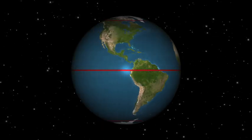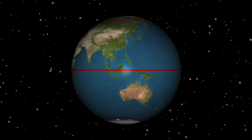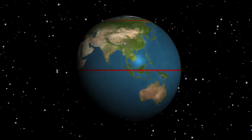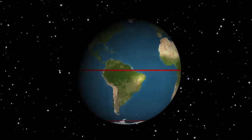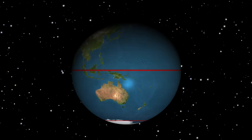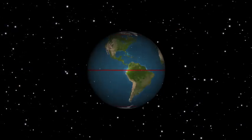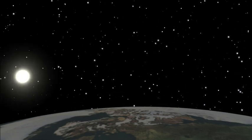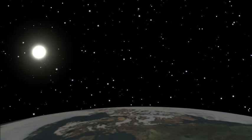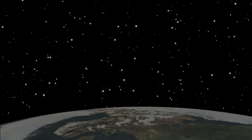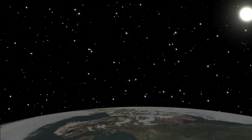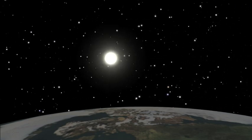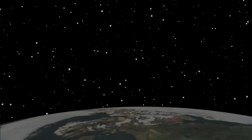At the equator, daytime and nighttime are equal to within a few minutes. But at distances north and south of the equator, the length of the day varies with the season, with the longest and shortest days being on the solstices. At the poles, once the Sun has risen, it stays up for six months before it sets again, and during the course of each day it travels in a complete circle around the edge of the sky.